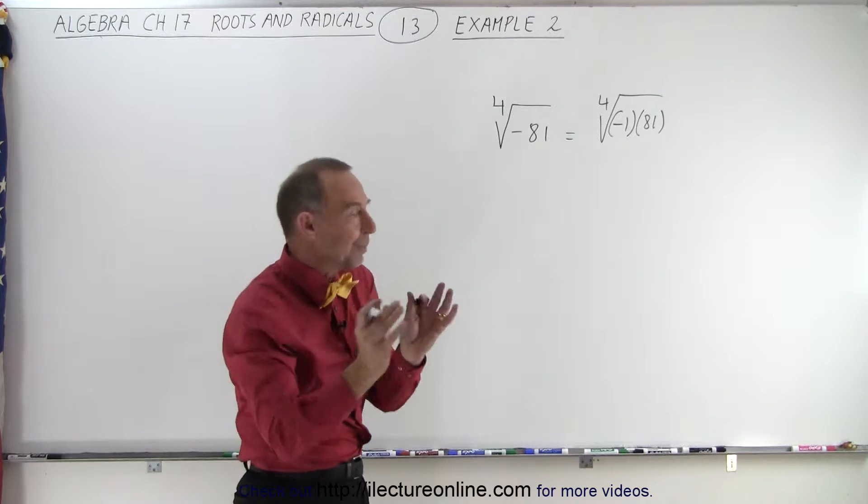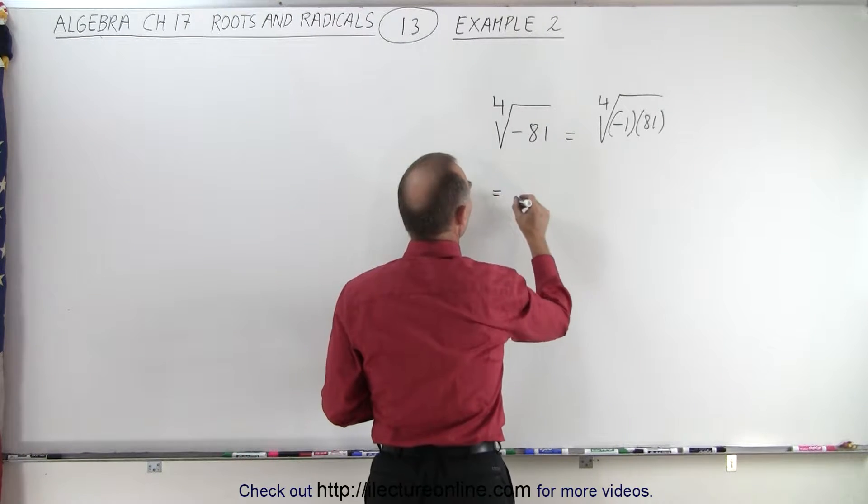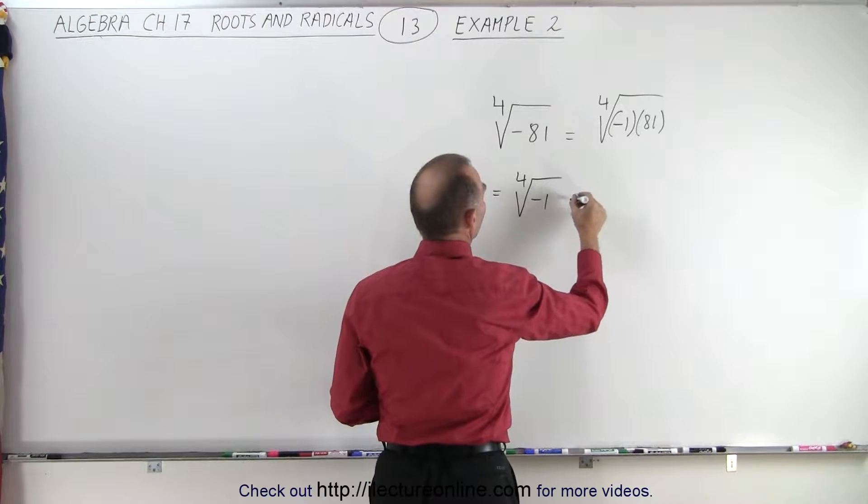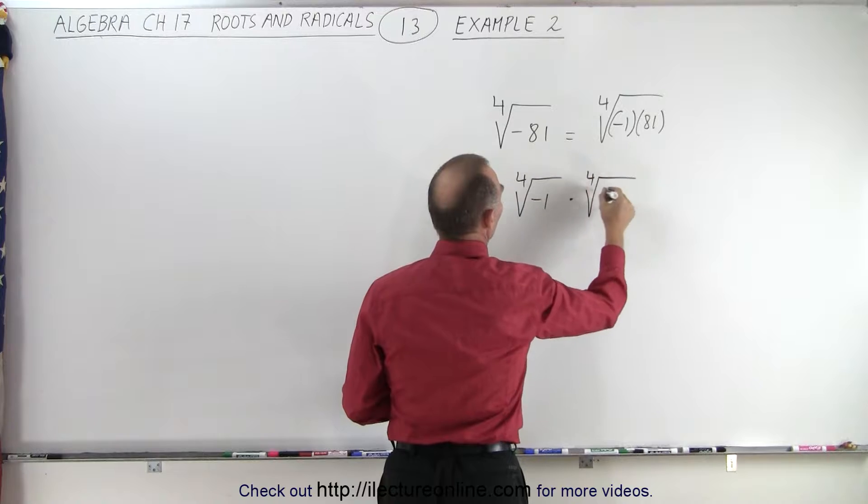And now, since we have a product, we can separate those two. And this can be written as the fourth root of negative 1 multiplied times the fourth root of 81.